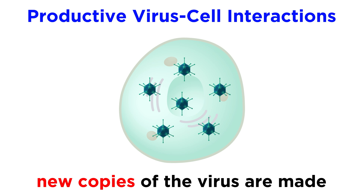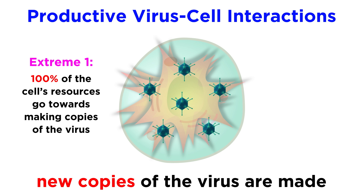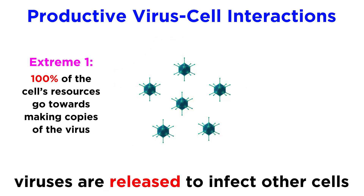In a productive virus-cell interaction, on the other hand, new viruses are made. These infections can fall anywhere on the spectrum between two extremes. On one end, 100% of the cell's resources are channeled into making copies of the virus, which ultimately causes the cell to die. When the cell dies, it essentially explodes and releases a slew of viruses that can then infect neighboring cells, and the cycle continues. This is called a lytic infection.